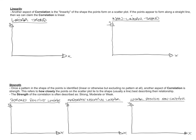Linearity is another aspect of correlation. And that's referring to the shape of the points formed in the scatter plot again. But how well the shape looks like a straight line, basically. So if the points appear to form along a straight line, then we can claim the correlation is linear. So if we had points that look something like this, similar to before, you could basically draw a line through those, because it fits the trend of those points well. You could say that's roughly linear.